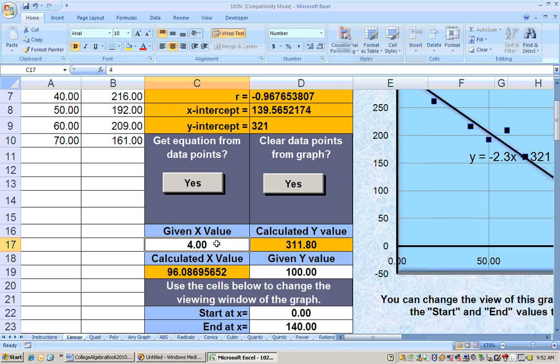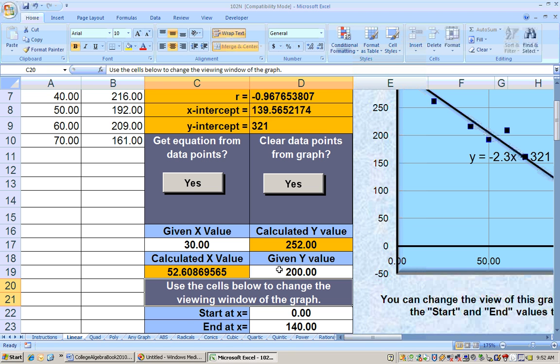For example, if we wanted to know what the predicted winning time would be in 1950 in which the race was rained out, it would be 252 minutes. Here I can put in a value for y, like if I want to know when will the winning time be 200 minutes, according to this model, it's 52.6 years after 1920, so around the year 1972.6.